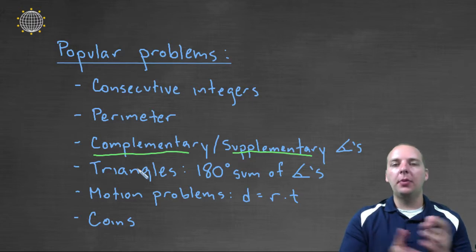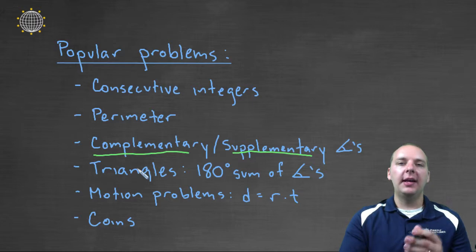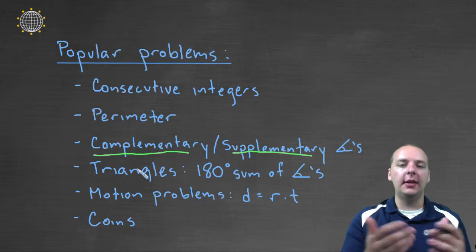Another popular problem I could think of that we see a lot is dealing with combinations of coins, like nickels and dimes and quarters, that add up to a certain dollar amount. You have to figure out how many nickels and dimes you have and that sort of thing.